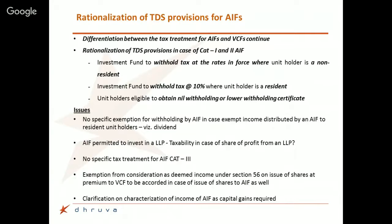There is also an interesting issue: what if an AIF earns a share of profit from an LLP? Such income is not chargeable in the hands of the LLP even though its character is business income. The question arises whether any distribution or accrual from that LLP profit share would attract a 10% TDS — and this is something that is likely to remain unresolved and create certain issues.